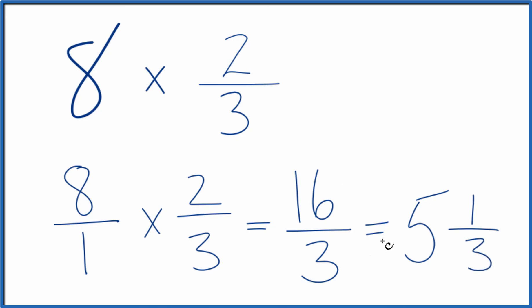So 16/3, that does equal the mixed number 5 and 1/3. So in answer to our question, 8 times 2/3 equals the fraction 16/3 or the mixed number 5 and 1/3. This is Dr. B. Thanks for watching.